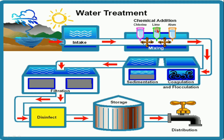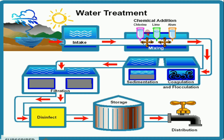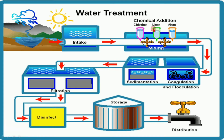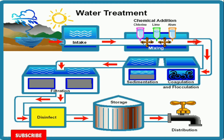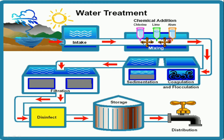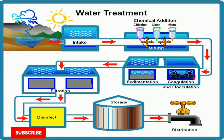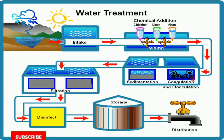Before the sedimentation tank, we need to add chlorine, lime, and mix them together. We need to mix these three compounds in order to kill the microorganisms before the main process begins. By mixing all these components, we will be cleaning out some microorganisms from the water.